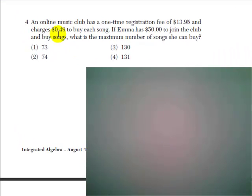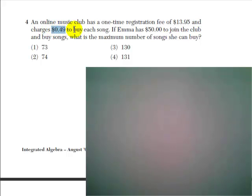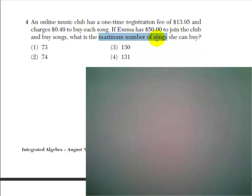Question number four says: an online music club has a one-time registration fee of $13.95 and charges $0.49 to buy each song. If Emma has $50 to join the club and buy songs, what is the maximum number of songs she can buy?